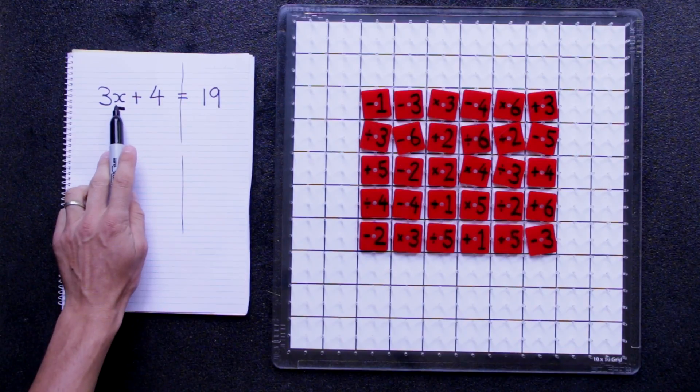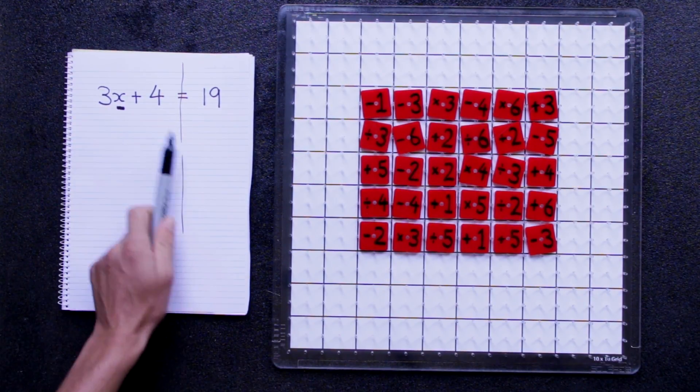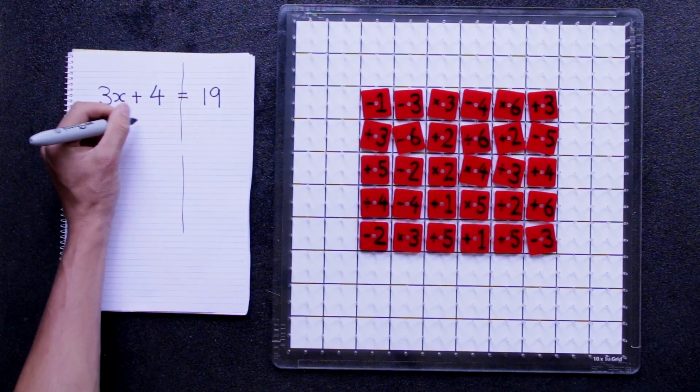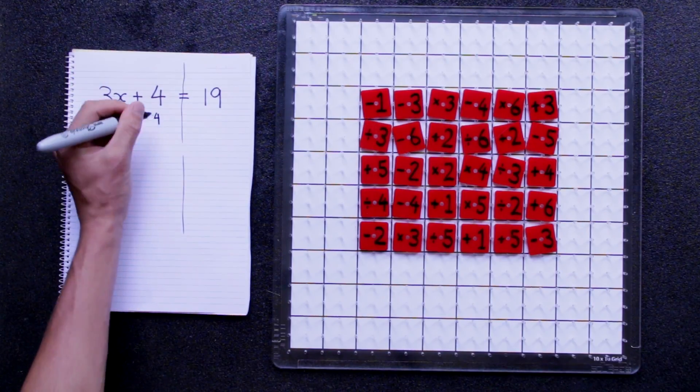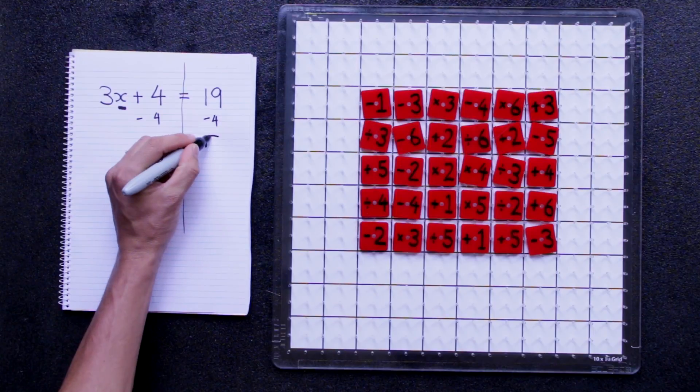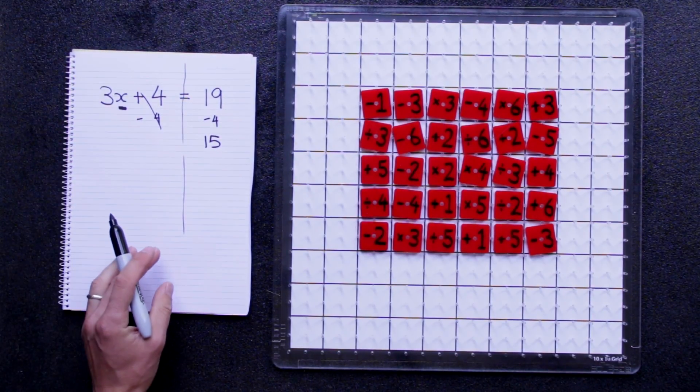If you wanted to find out how strong they are, they need to be on the tug-of-war rope by themselves. At the moment, there's something that's tripling their strength and something that's adding 4. So if we subtract that from both sides, we get 15 over here, and this disappears because plus and minus are opposites of each other.